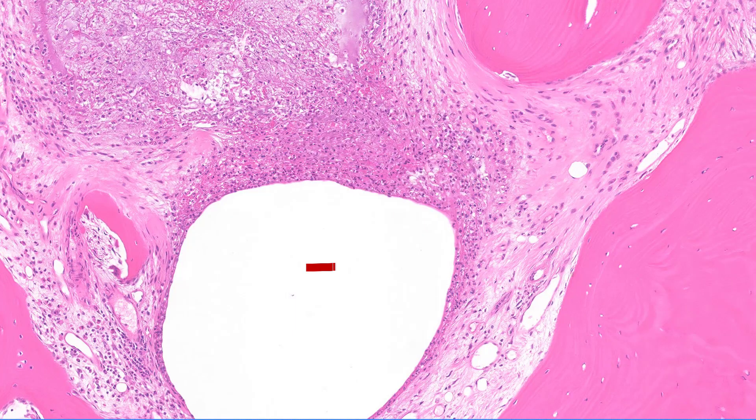Here's the subchondral cyst right here. I want you to pay attention to the neutrophils here — there are a couple of neutrophils. This does not make it osteoarthritis; you may see occasional aggregates of neutrophils in severe osteoarthritis.